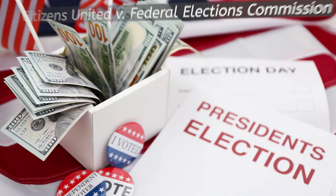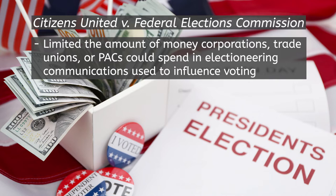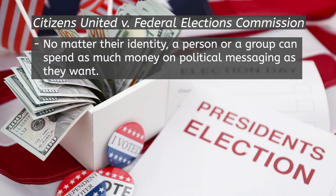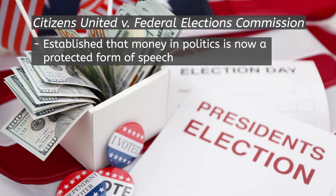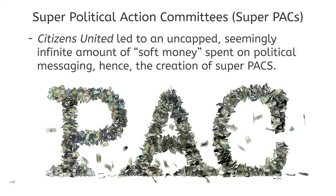However, a recent Supreme Court case, Citizens United v. Federal Elections Commission, struck down an important provision in the 2001 Bipartisan Campaign Reform Act. The provision had limited the amount of money corporations, trade unions, or PACs could spend in electioneering communications used to influence voting. In Citizens United, the court declared that, no matter their identity, a person or group can spend as much money on political messaging as they want — establishing that money in politics is now a protected form of speech. The outcome resulted in a boom of soft and dark money through the creation of super PACs, with seemingly uncapped amounts of soft money spent on political messaging.